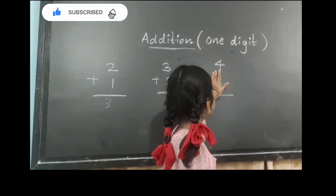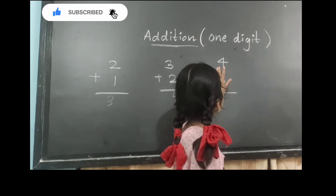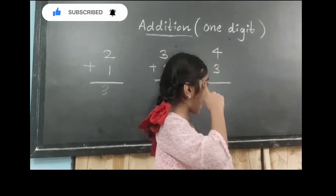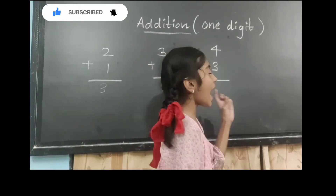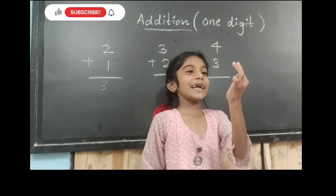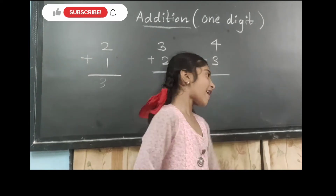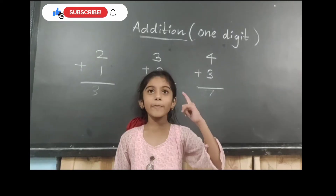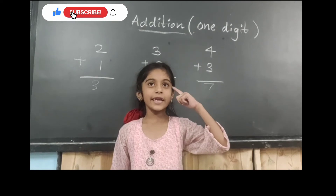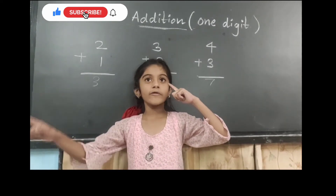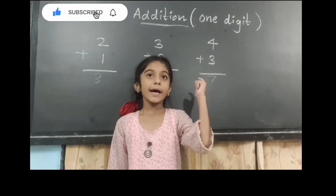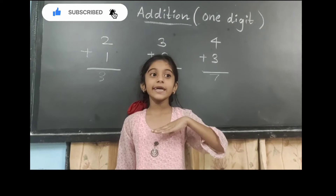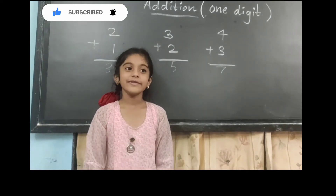And next number is four plus three. Four in mind, three in hand. After four: five, six, seven. We will put here seven. We will put three numbers — the upper number in the mind, and the lower number on fingers.